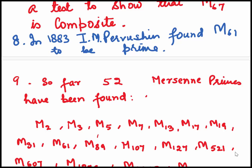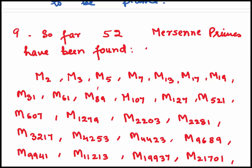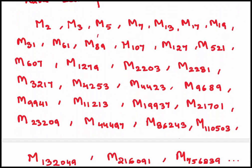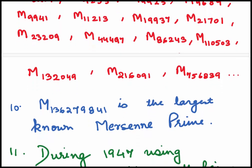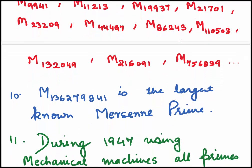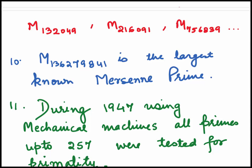In 1883, Ivan Mikovich Pervushin, who was a clergyman and a mathematician, found M61 is a Mersenne prime. He was specially involved in Mersenne numbers. So far, 52 Mersenne primes have been found. I have just listed them here. The largest Mersenne prime so far is M136279841. This is a very recent find.